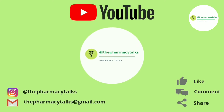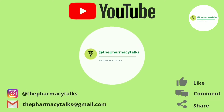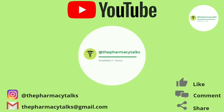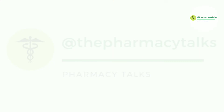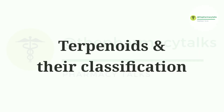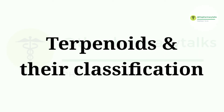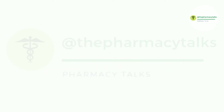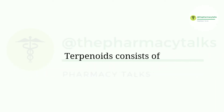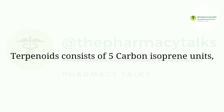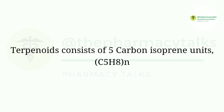Hi everyone, welcome to the channel The Pharmacy Talks. Today our topic of discussion will be terpenoids and their classification. Terpenoids consist of 5-carbon isoprene units having the molecular formula C5H8.